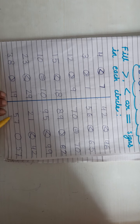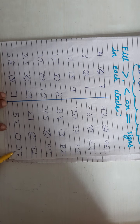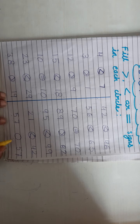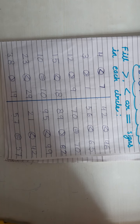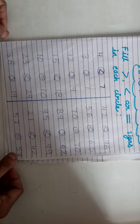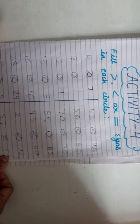This is 57 and this is also 57. दोनों सेम नंबर है तो हम क्या लगाएंगे? Equal. यह हमारी activity थी। (Both are the same number so we put equal. This was our activity.)